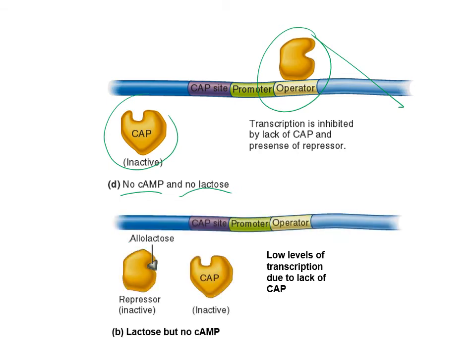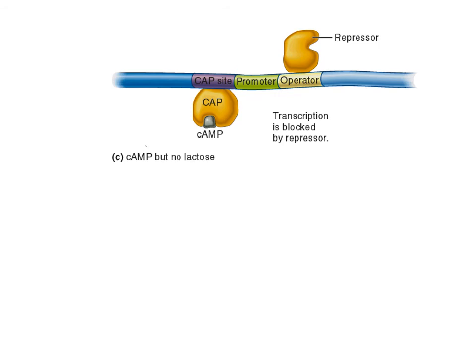If we have lactose, it will remove the repressor — but if we don't have any activator present, we only get low levels of transcription. Now consider the case where we have cAMP, meaning glucose levels are low, but we don't have any lactose. There's no point making the machines to break down lactose if there isn't any. So the repressor is still sitting there, and even though we have the activator protein bound — which would help RNA polymerase bind — it wouldn't get anywhere because the repressor is still present.